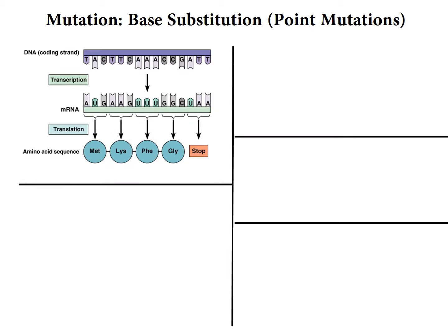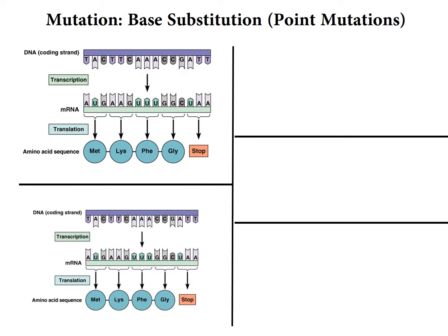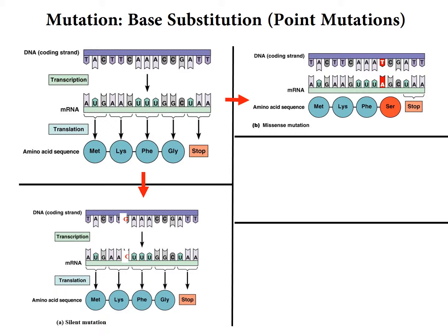Let me show you some examples to help you understand better. These are examples of base substitutions — point mutations. Here is the original sequence with the amino acid sequence: methionine, lysine, phenylalanine, glycine. In a silent mutation, you can see that despite some substitution in the bases, the amino acid sequence remains the same. In a missense mutation, the sequence has changed glycine to serine, which is a different amino acid — so that is a missense mutation with a phenotypic effect.